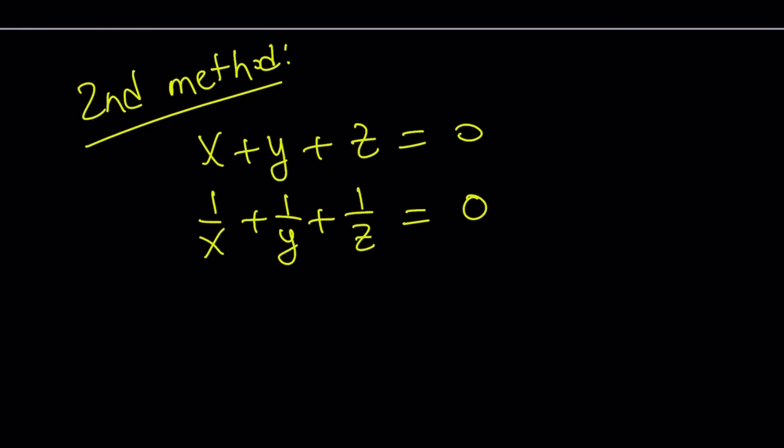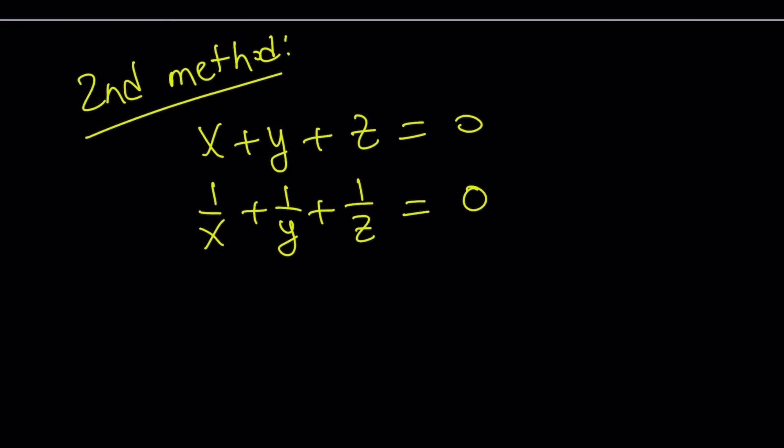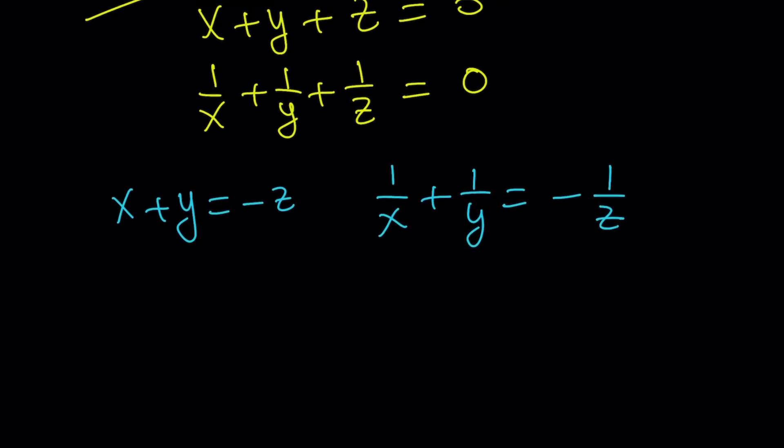So we have this system. And my second method basically depends on treating Z as a number. So by the way, you could replace Z with something like one and kind of go from there. But I'm going to go ahead and treat it as a constant anyways. Okay. So let's go ahead and do the following. I'd like to separate the Z. So let's go ahead and write this as X plus Y equals negative Z. And one over X plus one over Y equals negative one over Z. Okay, great. Now, here's what I'm going to do. Make a common denominator again.